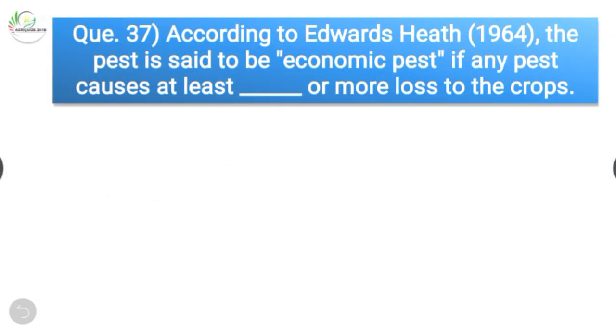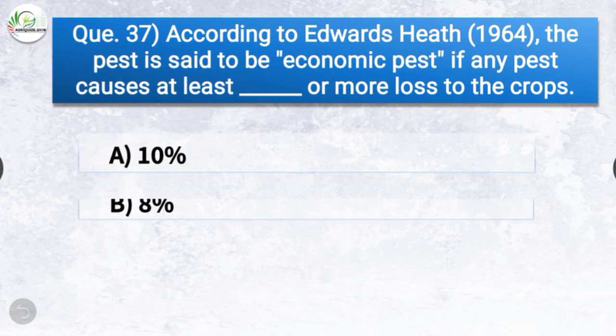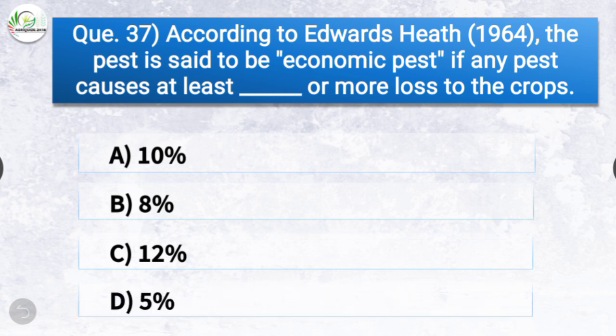Question number thirty-seven: According to Edwards and Heath in 1964, the pest is said to be an economic pest if any pest causes at least dash or more loss to the crop. The options are 10%, 8%, 12%, or 5%. The correct answer is option D, 5% — according to Edwards and Heath, a pest is economic if it causes at least 5% or more loss to the crop.